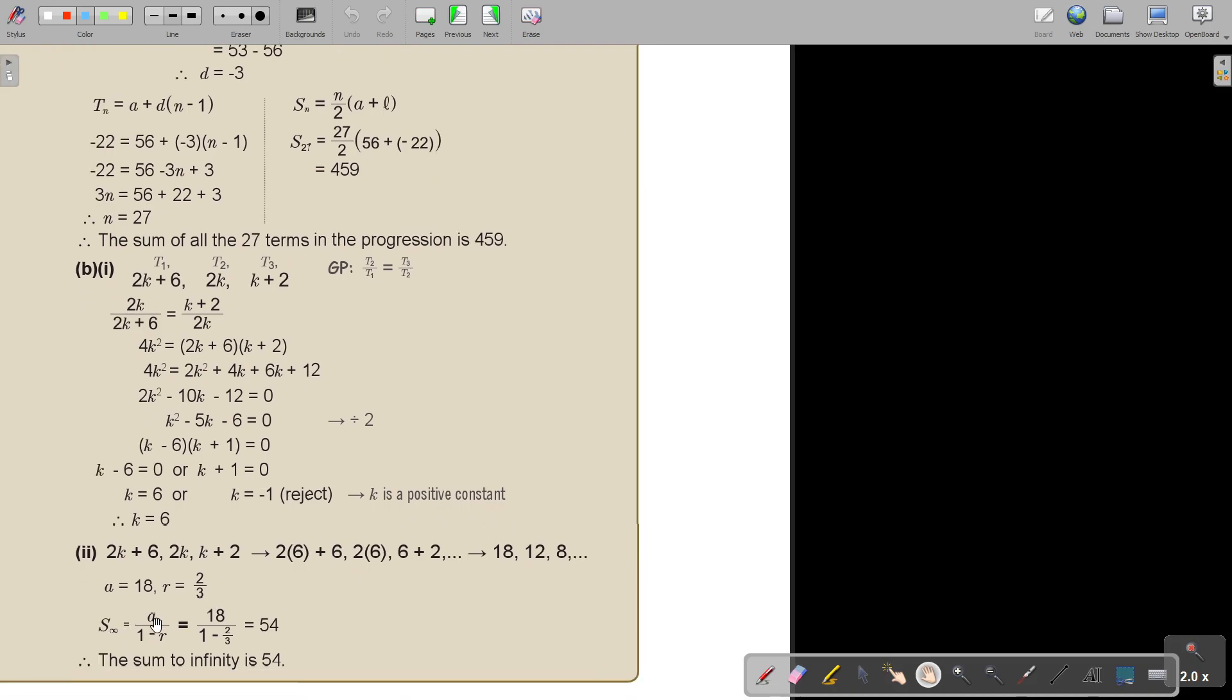And now the formula for sum to infinity is a over 1 minus r. So first get r by saying t2 divided by t1, that's 2 thirds and then substitute and the sum to infinity is 50. Not that very basic one.